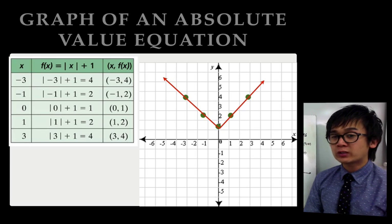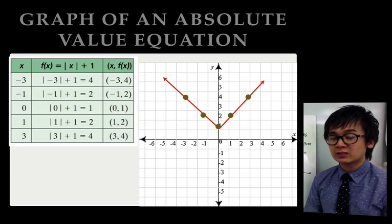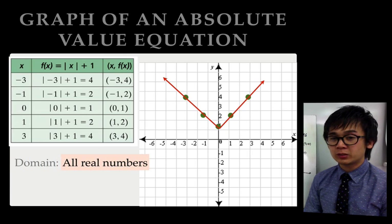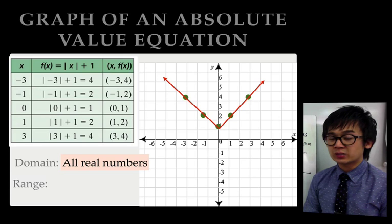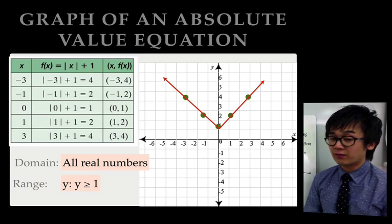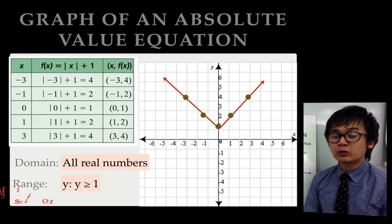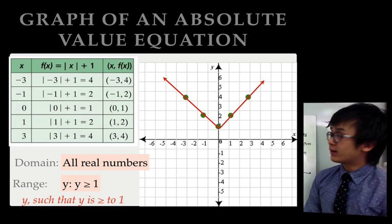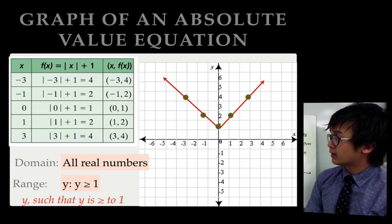If you're going to describe the domain and range of the function: the domain, just like in our previous lesson, is all real numbers. If you move your pencil or ruler from the leftmost side of the axis to the right-hand side, it touches all values of x, so the domain is all real numbers. For the range, it starts from positive 1 going to positive infinity. In symbol form, the range is y such that y is greater than or equal to 1. This is how you write your domain and range given a function.